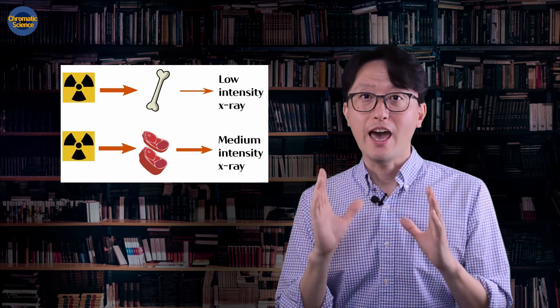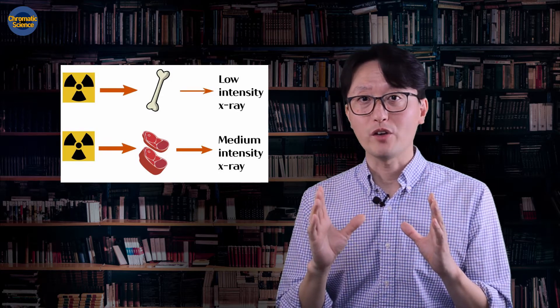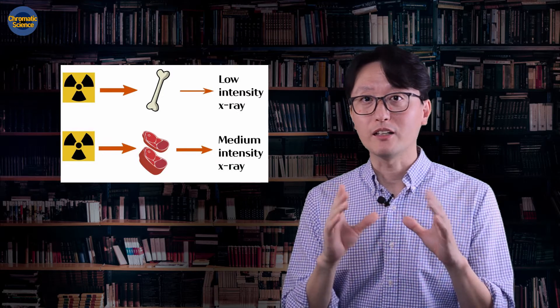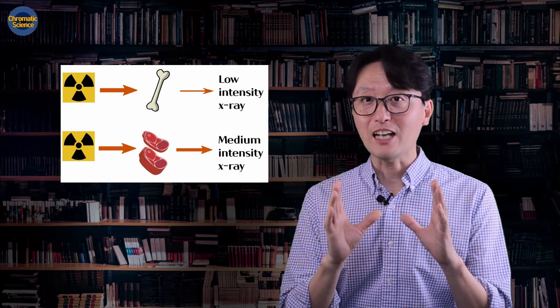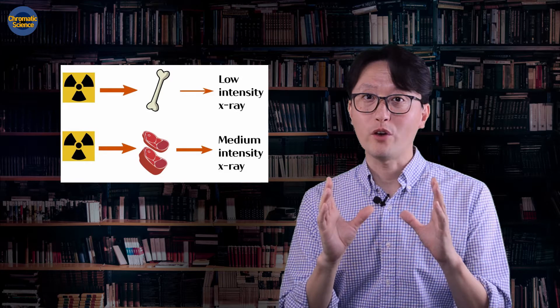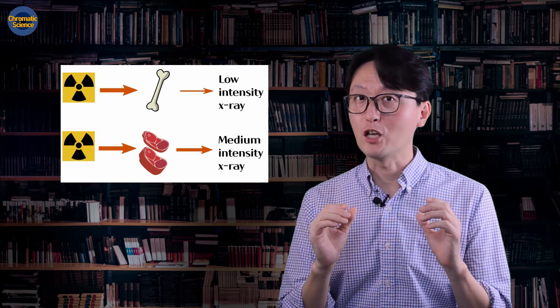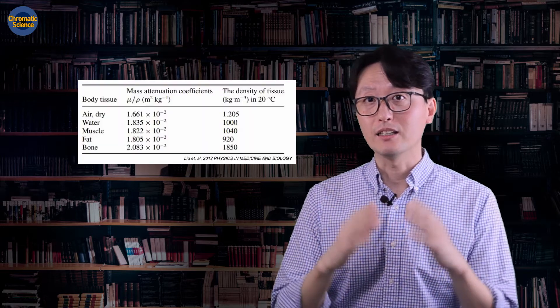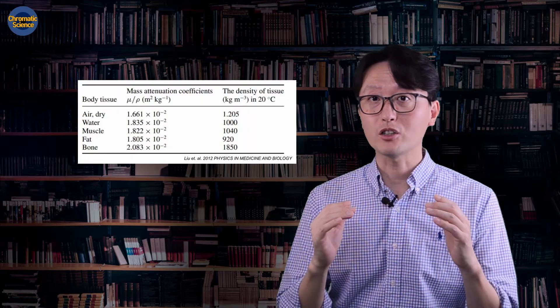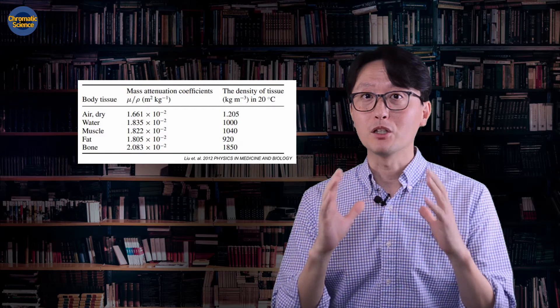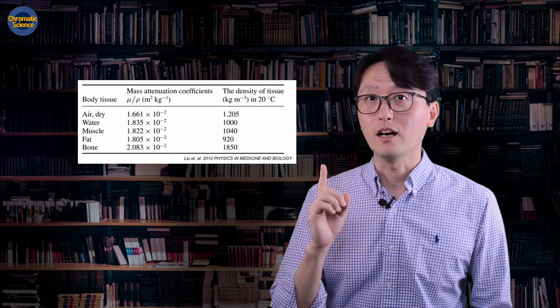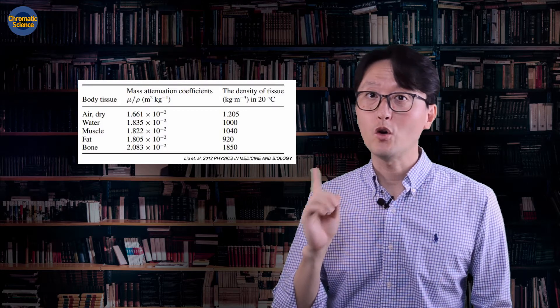But if the x-ray penetrates soft tissues like fat or muscles, the x-ray's strength will not be reduced as much. We have special numbers that represent the level of x-ray strength reduction depending on the material. It is called the attenuation coefficient.